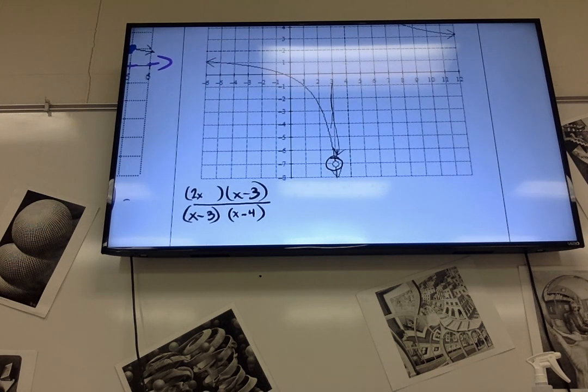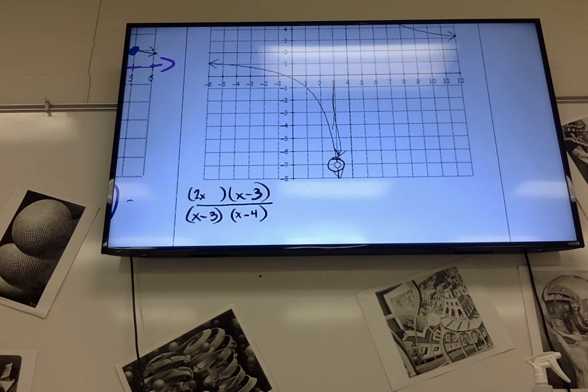This hole right here is at 3, negative 7. So when I cancel out these x minus 3's, that's what caused this 3. And what would leave me with the negative 7 is what's left on top. I don't know what it is. Over what's left on bottom. And that way you need the 7.